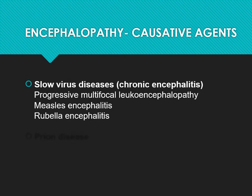Some infectious agents are referred to as encephalopathies, but they are not true encephalopathies — they are chronic encephalitis. The presentation is not acute; there is inflammation, but it is a chronic case. The term encephalopathy is still being used for these. This includes slow virus diseases such as progressive multifocal leukoencephalopathy, measles encephalitis, rubella encephalitis, and prion diseases.